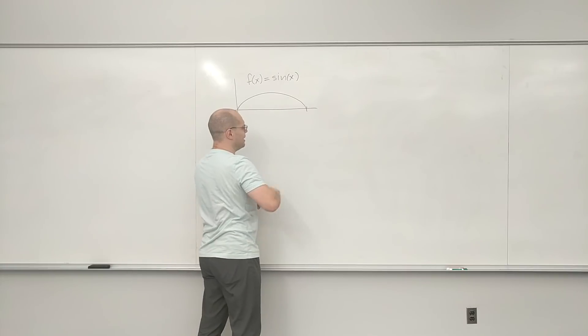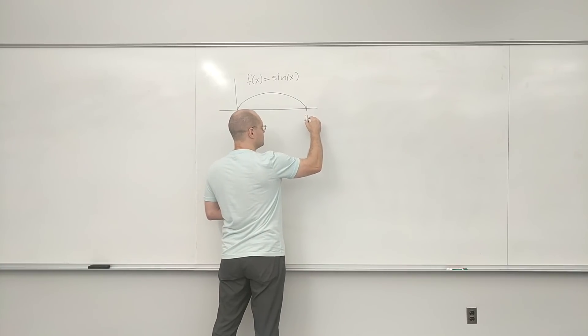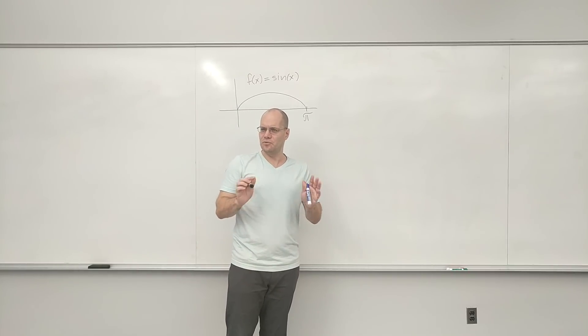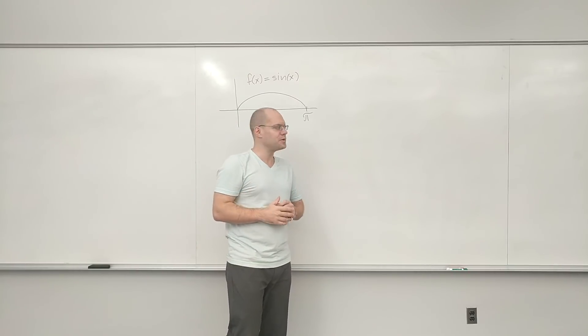And as you know, it zeroes out at π. So we're basically going from zero to π. And what do we think this area will be approximately, just so that we know if we got it wrong?